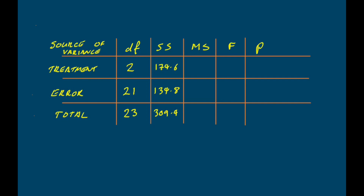The MS column stands for mean squares, which converts the sums of squares back into something comparable to a variance. To calculate the mean squares, we divide the sum of squares by the appropriate degrees of freedom. The treatment mean squares are 174.6 divided by 2, which equals 87.3. The error mean squares are 134.8 divided by 21, which equals 6.42. You can see that the variance explained by differences between group means (87.3) is much larger than the unexplained variance (6.42).